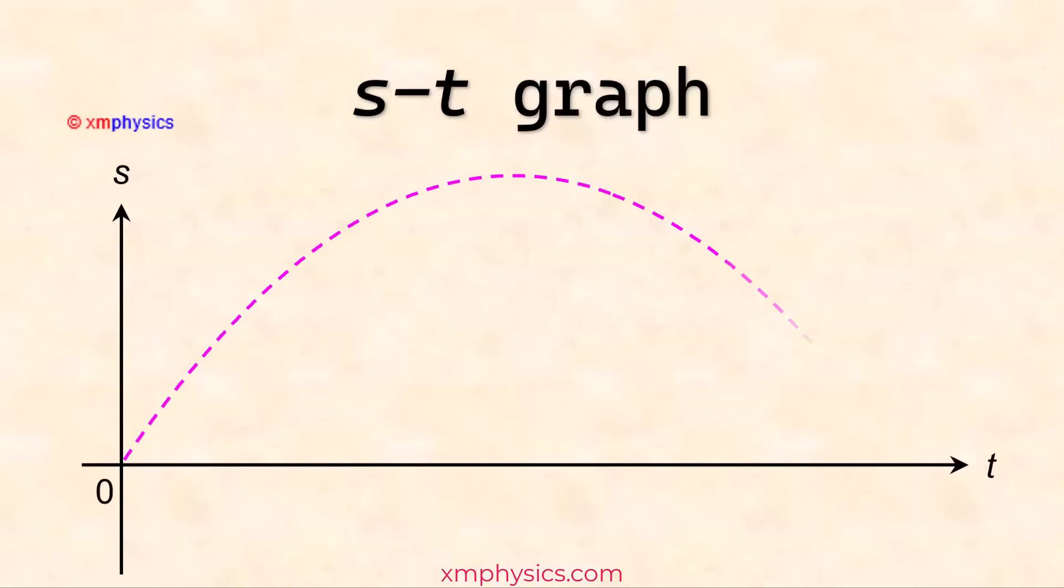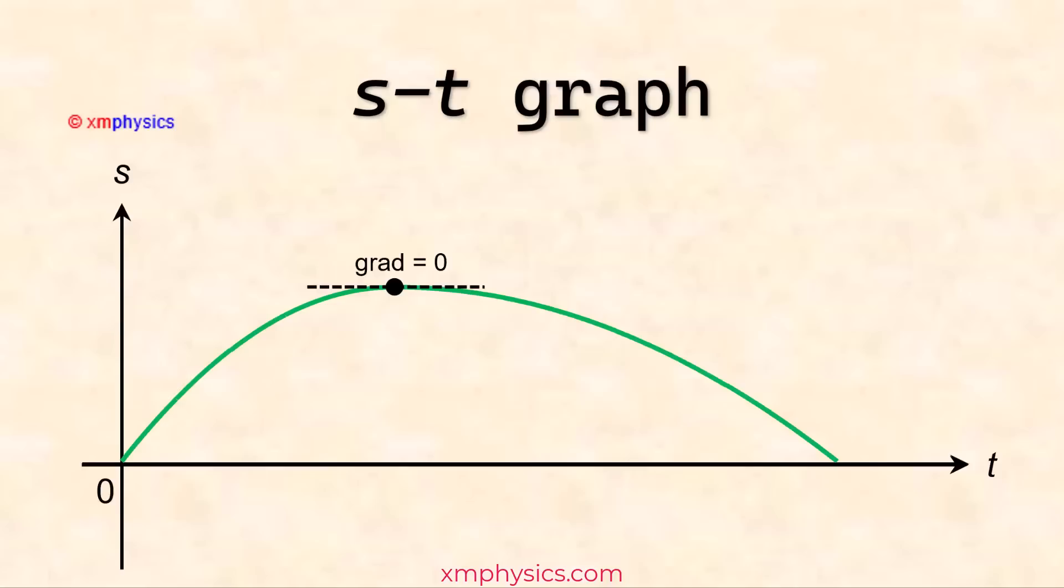As for the ST graph, if the air resistance is negligible, then it would have been this symmetrical quadratic curve. With air resistance, it loses the symmetry. As mentioned just now, it takes longer to come down than to go up. And pay attention to the gradients. So the gradient at the start of the graph should be drawn steeper than the gradient at the end because these gradients correspond to the speed at which the ping pong ball leaves the hand and at which it returns to the hand.